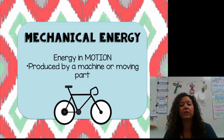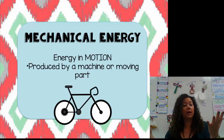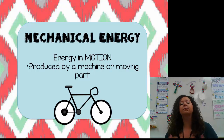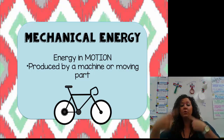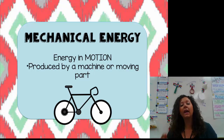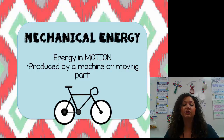The first form of energy is mechanical energy. Mechanical energy is energy in motion — mechanical and motion both start with an M. It is produced by a machine or a moving part, such as a bicycle. The only way you're going to get somewhere on a bicycle is if the bicycle is moving, and moving energy is mechanical energy. Anytime we say mechanical energy, we're going to do this like we're running.